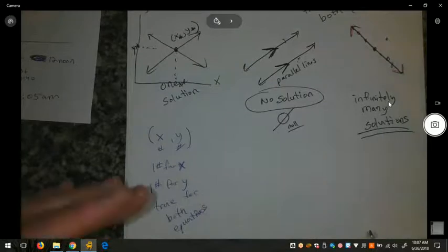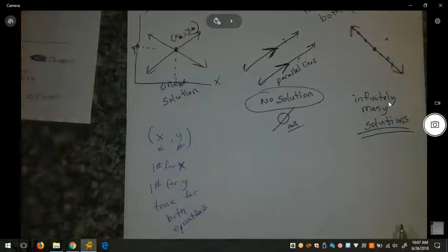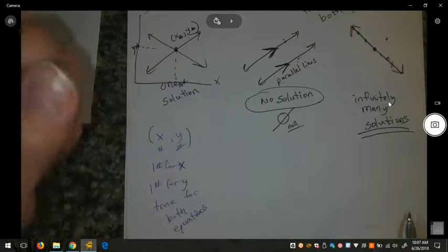One number for x, one number for y, true for both equations. This is what happens when we solve algebraically. We'll get that number, we plug it in, it works. We're happy, we're confident we did it right.